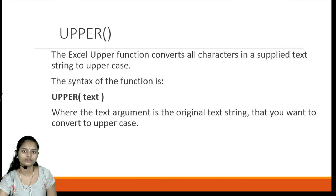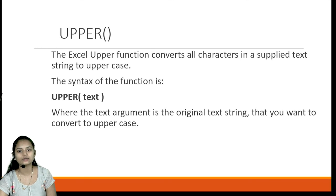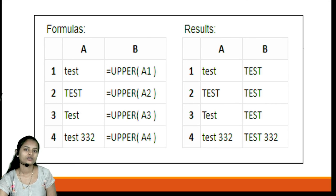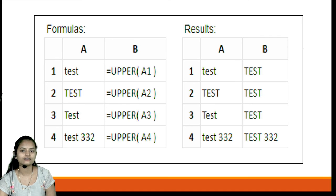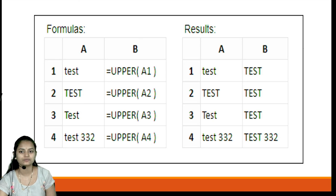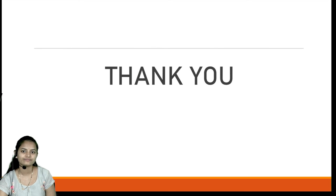Next is the UPPER function, which converts all characters from a supplied text string to uppercase. The syntax is UPPER(text). In the example, 'test' is the input string and applying =UPPER(A1) converts the result to all capital letters. Note that UPPER will not convert numbers — only alphabets are converted to uppercase.